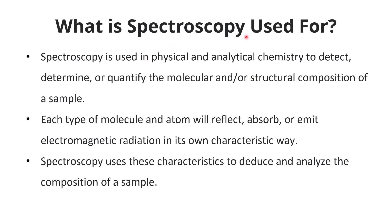The uses of spectroscopy are: it is used in physical and analytical chemistry to detect, determine, or quantify the molecular or structural composition of a sample. Each type of atom or molecule absorbs a particular wavelength, causing absorption, and when it returns to ground state, it gives out a particular energy. Both characteristics tell us about the type of sample. Spectroscopy uses these characteristics to deduce and analyze the composition of a sample, making it an analytical technique that helps identify the type of atom or molecule.